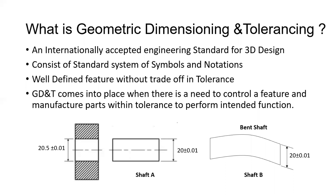GD&T allows geometric features in 3D designs to be defined accurately without tightening tolerances. You can define the geometric feature and get the same physical part from manufacturing. For example, looking at a shaft and a hole: shaft A is a perfect straight shaft while shaft B is bent. Both shafts will pass quality inspection if the only criterion is diameter — 20 ± 0.01 — because both diameters are acceptable.